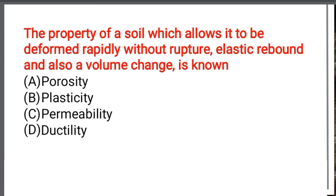Next question: The property of soil which allows it to be deformed rapidly without rupture, elastic rebound, and also volume change is known as — Option A: Porosity. Option B: Plasticity. Option C: Permeability. Option D: Ductility. The correct answer is Option B: Plasticity.